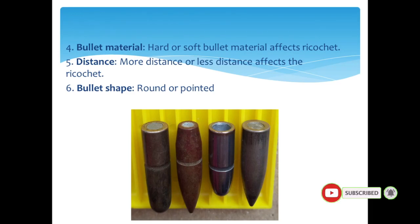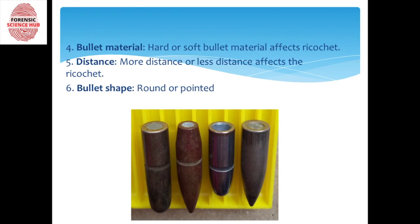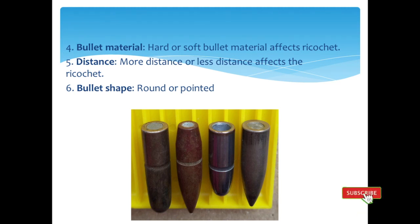Next comes distance. If two bullets are fired — one from 2 meters and one from 1 meter — the closer one will be able to penetrate more easily. The lesser the distance between the target and the bullet, the more energy it's going to have, and hence more chances of penetration and less chances of ricochet. The bullet fired from farther away wastes more energy through travel, and hence there are more chances that it will bounce off and show ricochet.